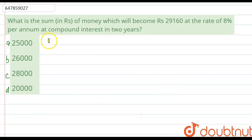Everyone, let us have a look at the question first. Question is, what is the sum of money which will become Rs. 29,160 at the rate of 8% per annum at compound interest in 2 years? That means you have to find the principal if the amount is given to you. It is Rs. 29,160 at the rate of 8% in 2 years and compound interest. So you have to find the principal, the amount is given.